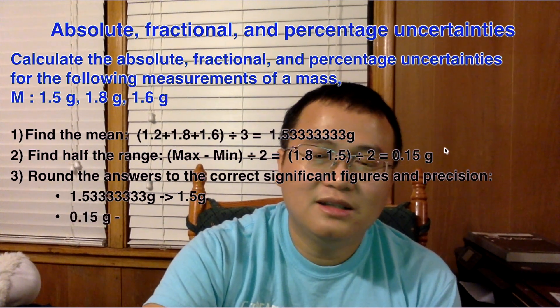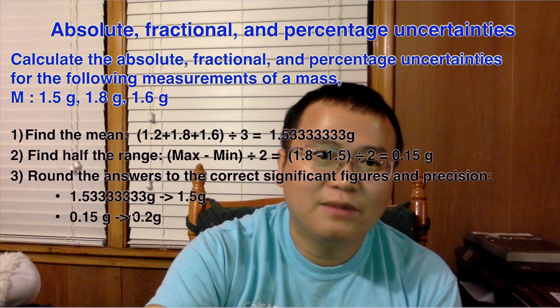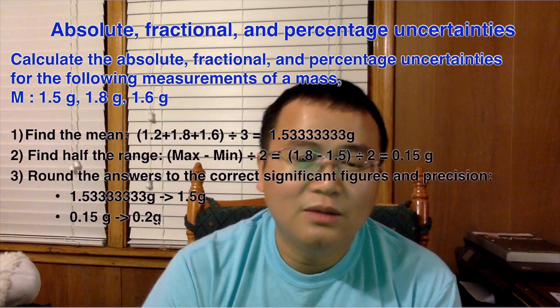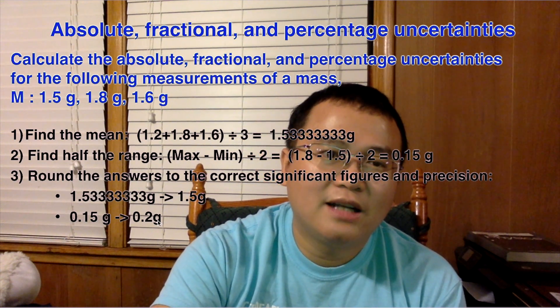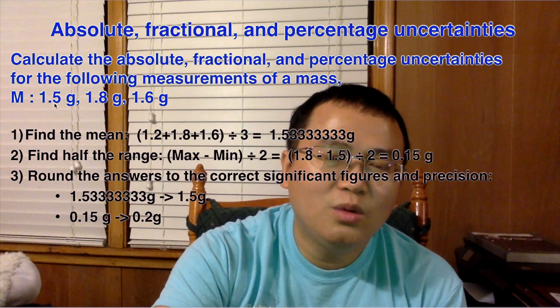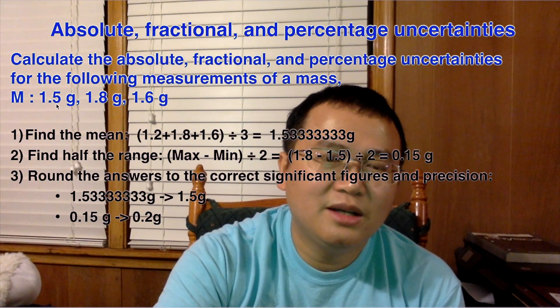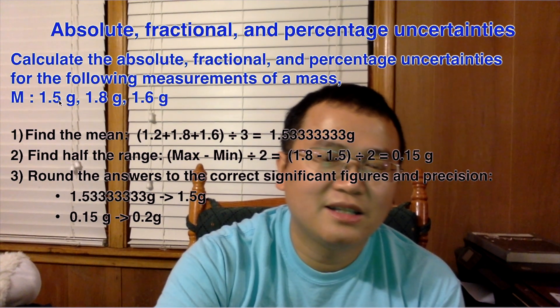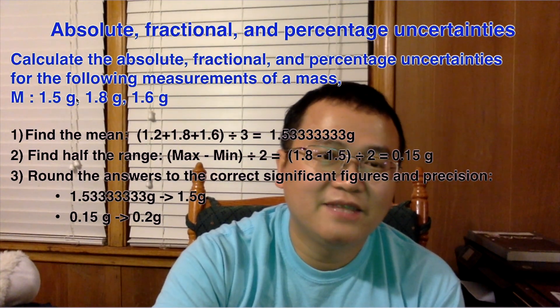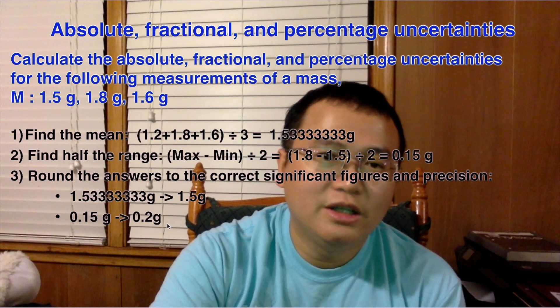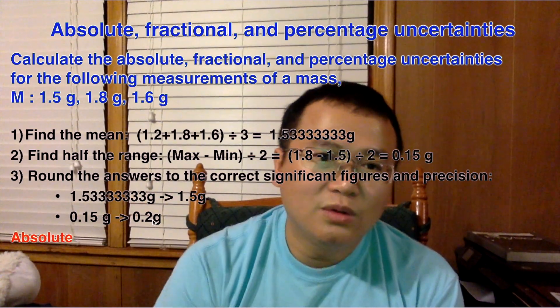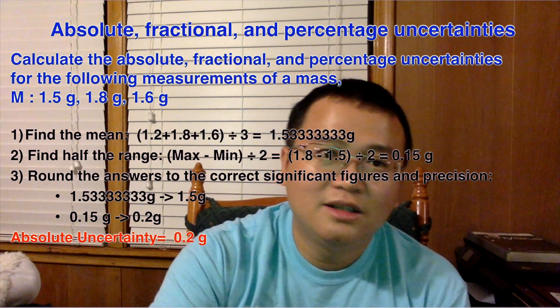So we also look at the uncertainty which is 0.15 grams. We need to round that up to 0.2 grams. Why? Well if you look at it, you will notice that there's only one number after the decimal, so this is how precise it is. 0.15 is more precise than what the data has given us, so that's one of the reasons why we need to round this up to 0.2.